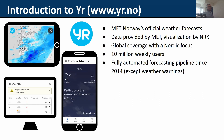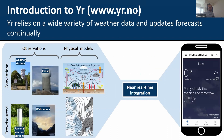This large user base has been important for us in product development because all these users generate feedback which we try to integrate and improve our products. Since about 2014, the main forecasts on YR are fully automated — the exception is weather warnings, which are produced by meteorologists on duty. Because our forecasts are automated, machine learning is a very important component of our forecasting system.